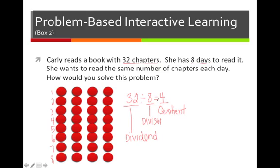Now I can write this number sentence using a division frame. The dividend goes inside, so 32 divided by 8 equals 4.